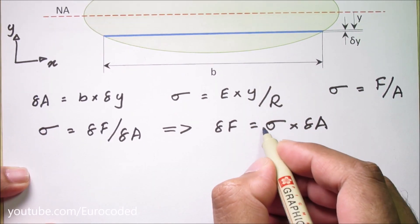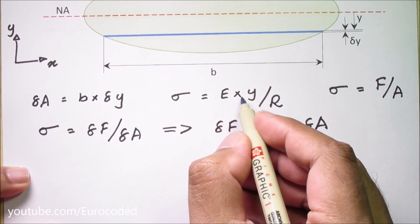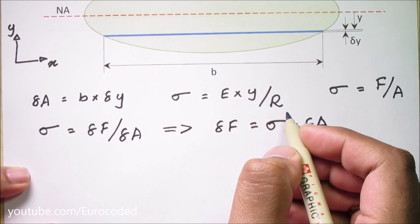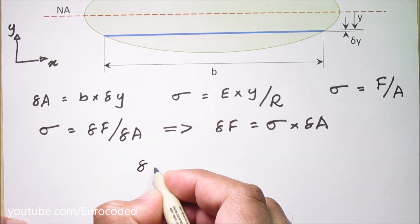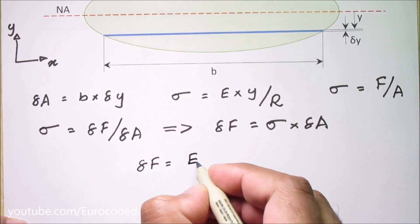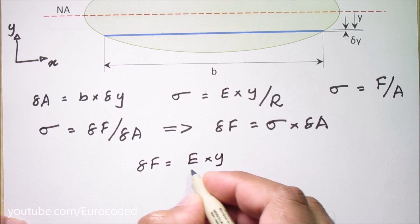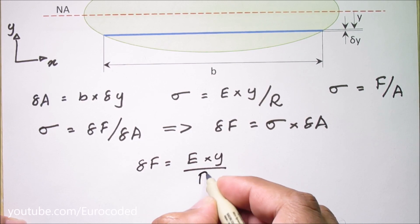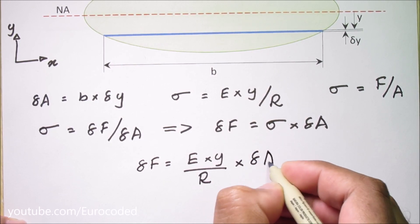Then we can replace this sigma with E times y over r. Then we can write delta F is equal to E times y over r times delta A.